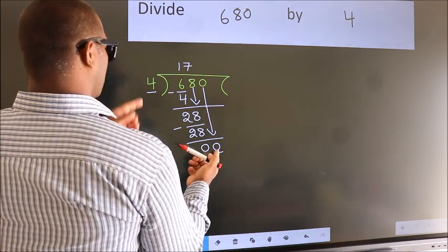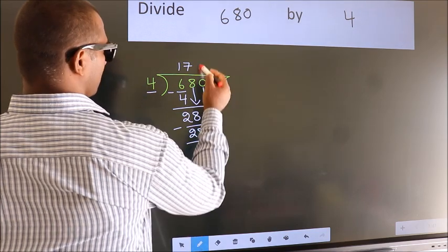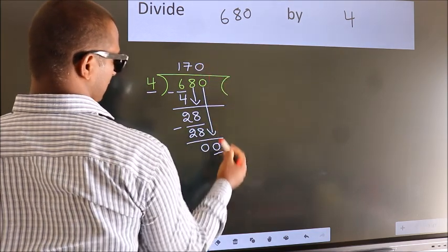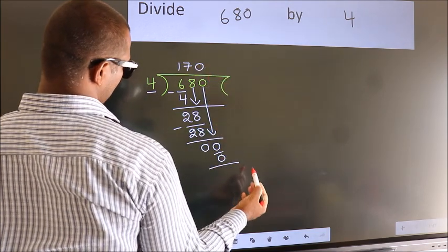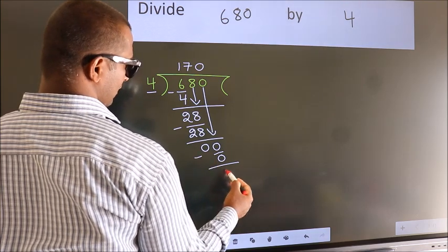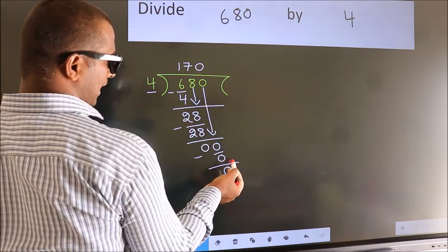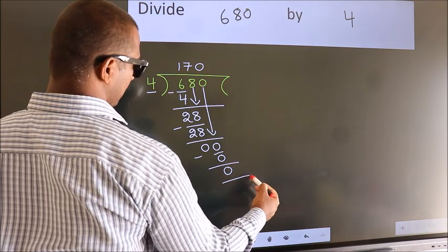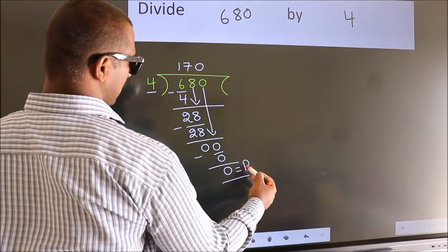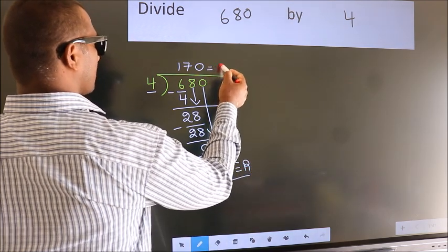When do we get 0? In 4 table. 4 times 0 is 0. Now, we subtract. We get 0. No more numbers to bring it down. So, we stop here. This is our remainder. This is our quotient.